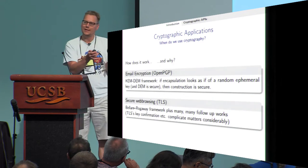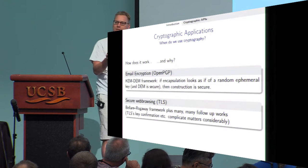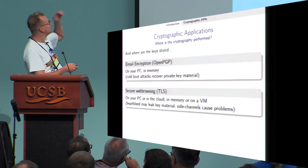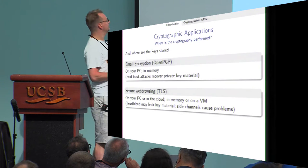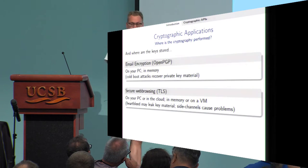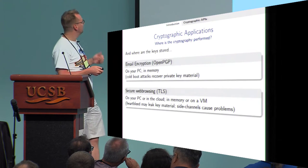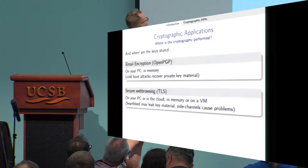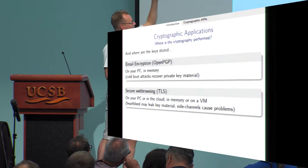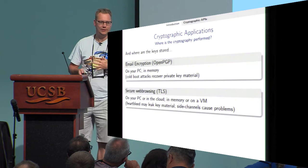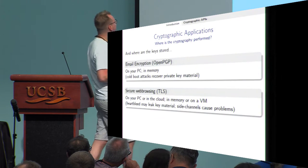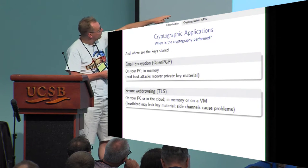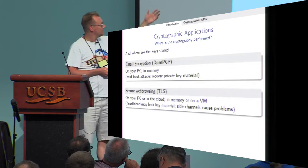The next question is: where do you store your keys? For email encryption, you could store them on your PC in memory. This is problematic because someone like Nadia might come along with a cold boot attack and recover your private key material — and that's bad. For secure web browsing, keys might be on your PC or in the cloud, but there might be leakage, side channels, or Heartbleed.